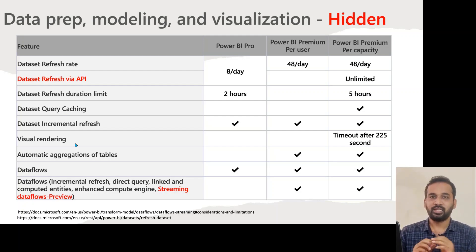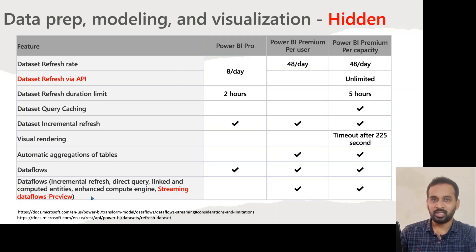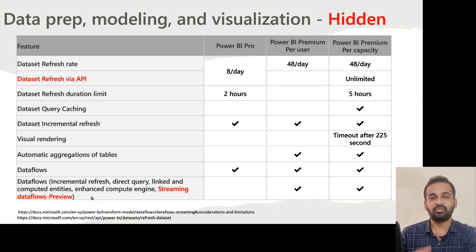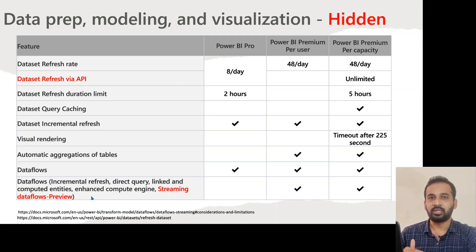For dataflows: the regular dataflow can be used with all license types — Pro, Premium Per User, and Premium Per Capacity. However, advanced dataflow features like incremental refresh, Direct Query to dataflows, linked and computed entities, duplicate/reference tables, enhanced compute engine, and streaming dataflows (in preview) — all of these are not available for Pro. They are only available for Power BI Premium Per User and Power BI Premium Per Capacity.